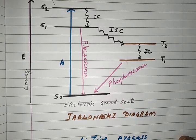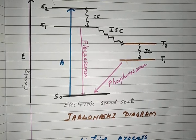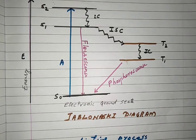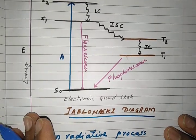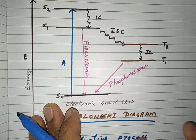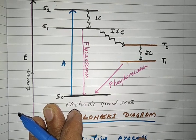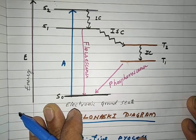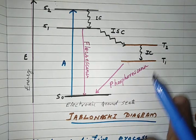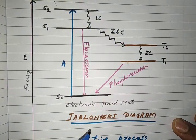Hello everyone, welcome to this lecture. In the last lecture we discussed about photochemistry, its introduction, and the Jablonski diagram. Here again in this lecture we will try to understand what are the results of photochemistry and the reactions taking place in the presence of light. So to understand this, here again is the Jablonski diagram we saw in the last lecture — you can watch that lecture for reference.